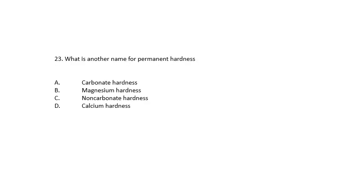Question 23. What is another name for permanent hardness? This relates to our previous question. Carbonate hardness, magnesium hardness, non-carbonate hardness, or calcium hardness. So permanent hardness is considered non-carbonate hardness.